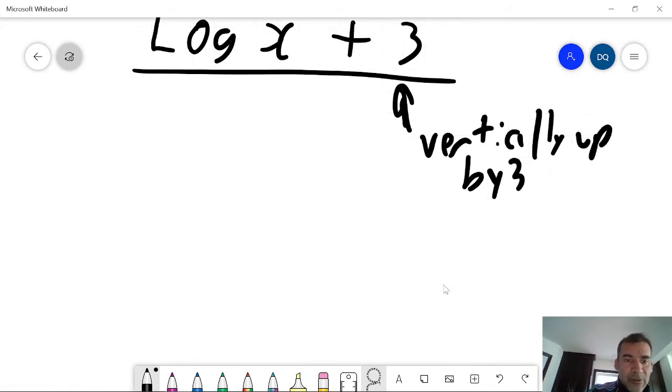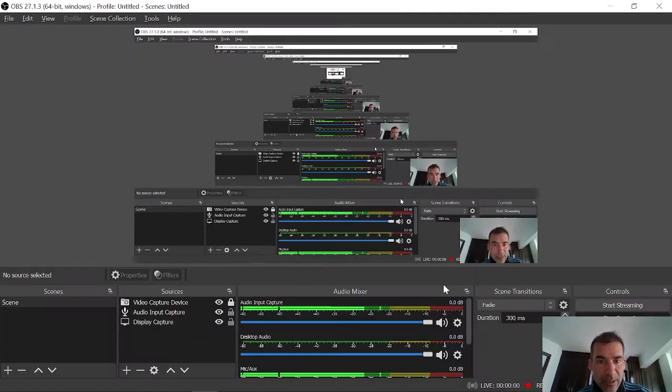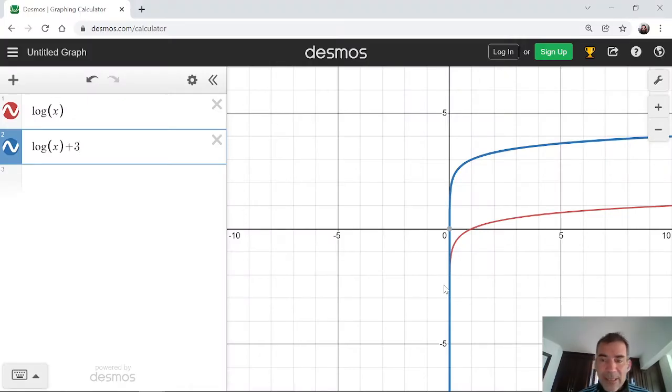Or in general, the log of x plus c is a vertical shift up by 3. Now this has no effect on the range because log x has a range where x can be any real number. So it is still any real number.